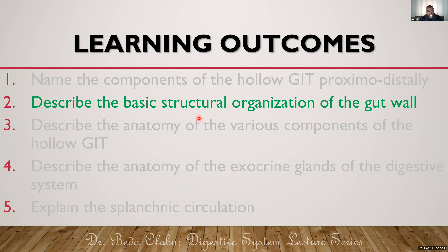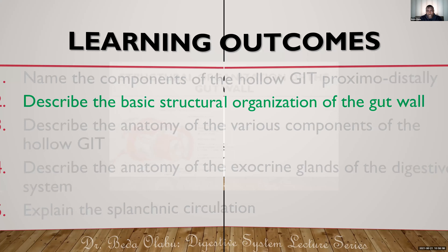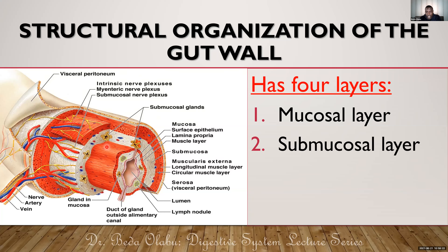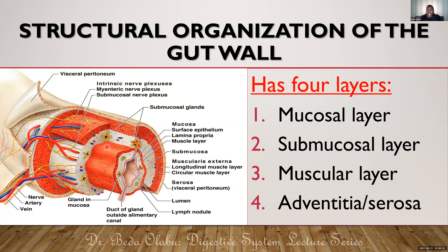Let's now talk about the structural organization of the GIT wall before we talk about the anatomy of each segment of the hollow GIT. Histologically, the gut wall has four layers. The innermost layer is called the mucosa, followed by the submucosa. The third layer is the muscular layer, also known as muscularis propria, and the fourth layer is the adventitia — also known as serosa — and I'll be telling you when we call it each.